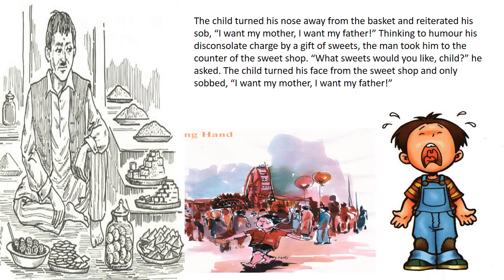The man takes him to the flower seller: 'Do you want me to put a garland around your neck?' The child says 'No, I want my mother, I want my father.' At last he takes him to the sweet shop and asks 'What sweets would you like?' Again the child turns his face away and sobs: 'I want my mother, I want my father.' Every single thing he had previously desired — he now refuses completely.